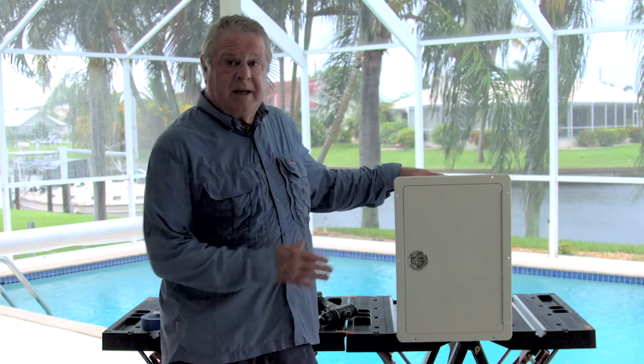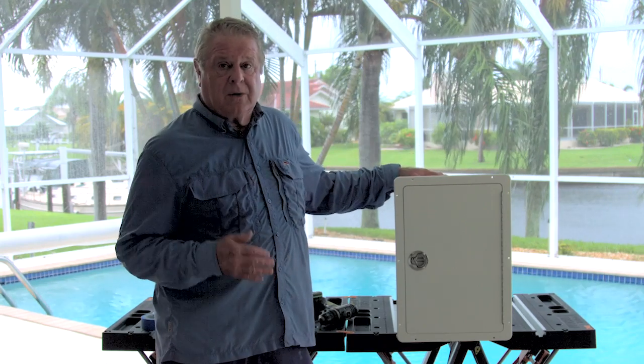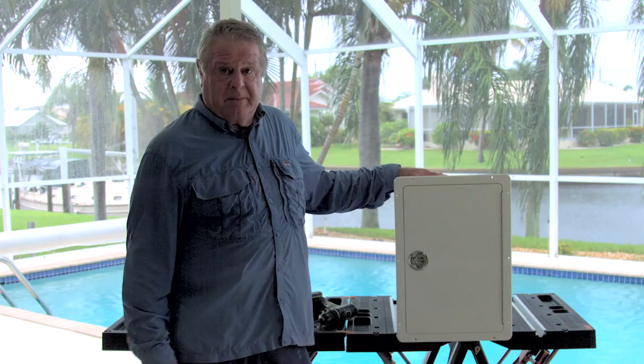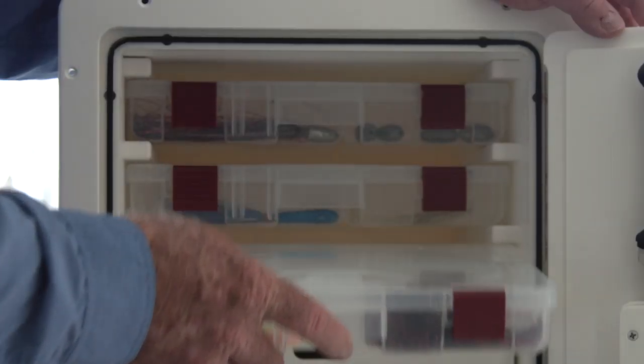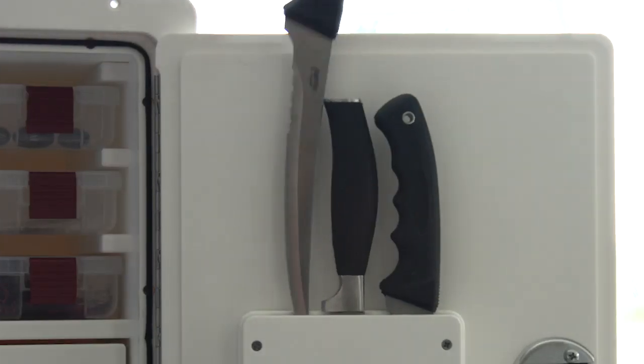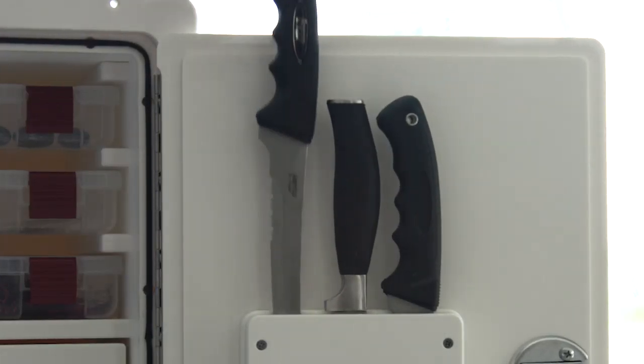This cabinet here we think is ideal for a center console in the mid-20s up into the mid-40s. It's got two tackle drawers, a spot for three tackle boxes, and knife holders in the door. It's also sealed around the edges to keep moisture out.